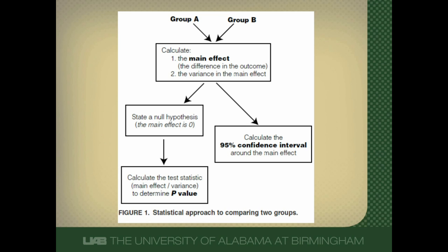Let's look at this graphically. We have two groups in a study: Group A gets our intervention, Group B is our control. The first thing we do is figure out the main effect — the difference in outcomes — and then we calculate the uncertainty or variance of that main effect. We can go down two pathways: one is the determination of p-values, which will be the focus of another video; the other is to calculate 95% confidence intervals around this effect. Both p-values and confidence intervals are given out by most statistical packages.